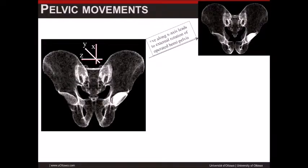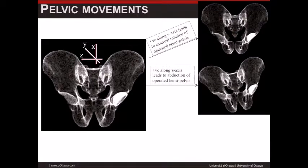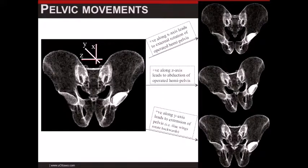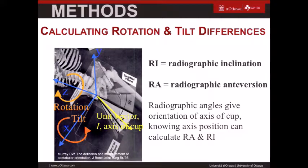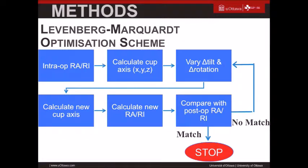We defined pelvic motion across three axes: obliquity, tilt, and rotation of the pelvis. For cup orientation we used EBRA, looking at change in inclination (post-op minus intraop) and similarly for anteversion and obliquity. A difference greater than 10 degrees was considered significant. To calculate tilt and rotation differences, we defined radiographic inclination and radiographic anteversion as defined by Murray.